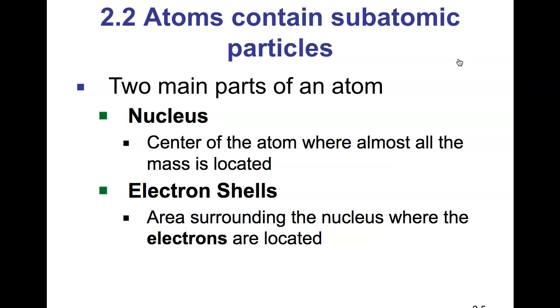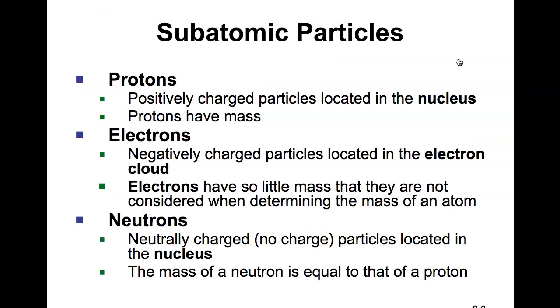Surrounding the nucleus are the electron shells, or sometimes referred to as the orbitals. The electron shells, or orbitals, are the areas surrounding the nucleus where the electrons are located.